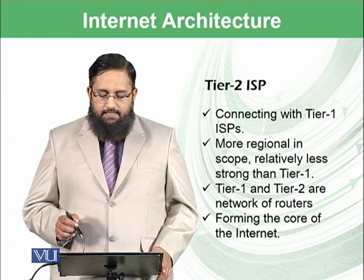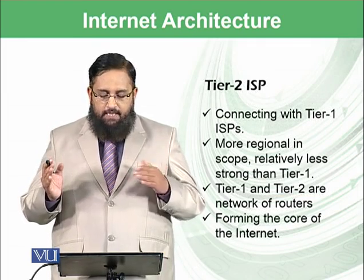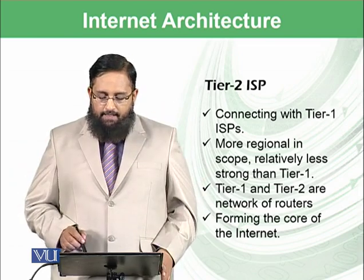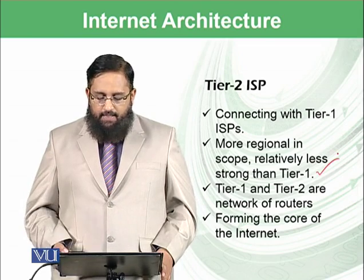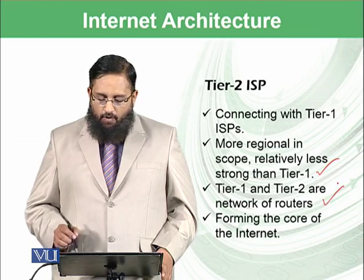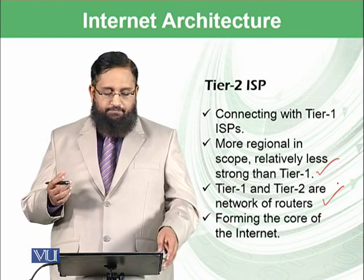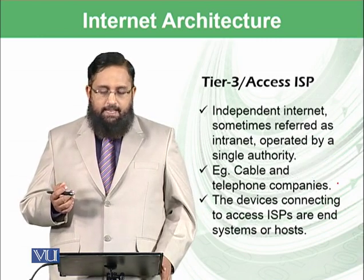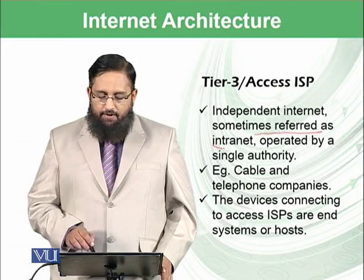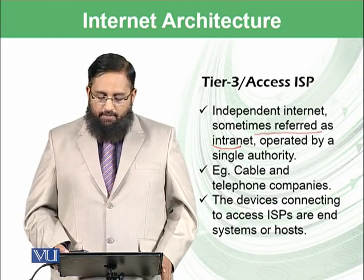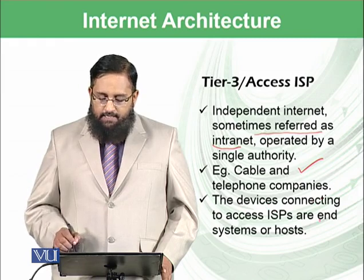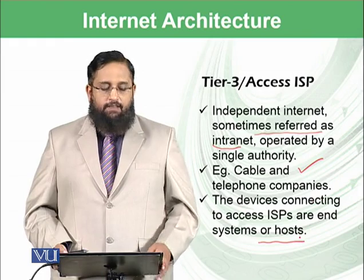Tier 2 ISPs are connected with tier 1 ISPs. They are more regional in scope — not worldwide — and relatively less powerful than tier 1 ISPs. However, tier 1 and tier 2 ISPs together form a network of routers that constitute the core of the Internet. Tier 3 or access ISPs are independent internet networks, sometimes referred to as intranets, operated by a single authority like cable and telephone companies. Devices connecting to these ISPs are called end systems or hosts.